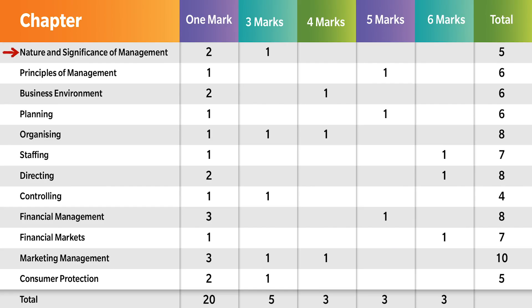Now, since you know the weightage of each chapter, you can clearly make up your mind which chapters to emphasize. If I talk about just the sample paper of this year, I will tell you where the questions of 1 mark, 3 marks, 4 marks, and 5/6 marks come from. The total is 20 questions of 1 mark, 5 questions of 3 marks, 3 questions of 5 marks, 3 questions of 6 marks, and 3 questions of 4 marks — totalling 34 questions.